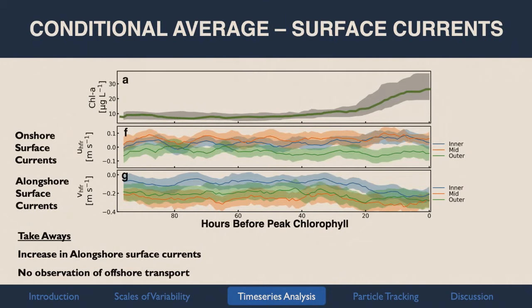Finally, showing the surface currents: there's a similar pattern of increase in alongshore surface currents, which makes sense as these are generally dominated by wind over the shelf. We don't see a general pattern of that offshore Ekman transport that you might expect from an upwelling scenario.